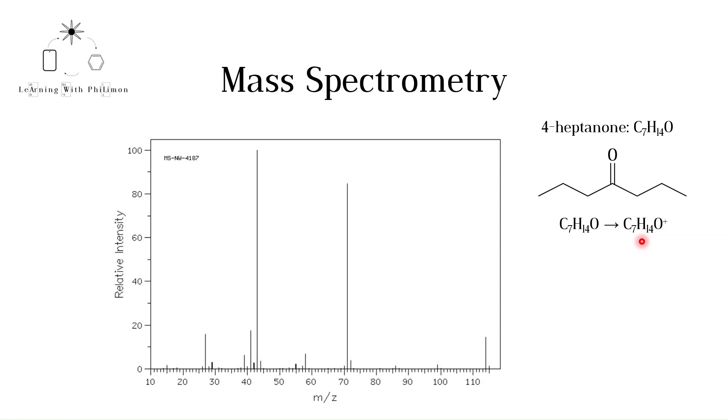The mass of the ion is 114, and the charge is 1+. This gives us a mass-to-charge ratio of 114. This is why we see a peak here.